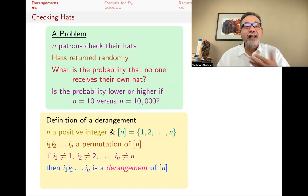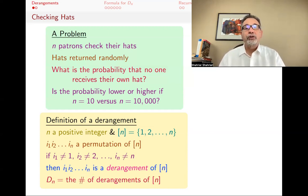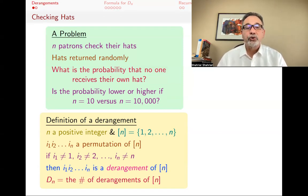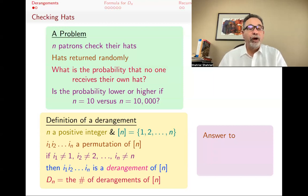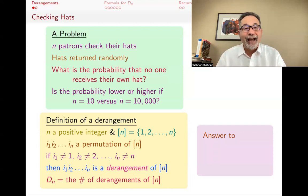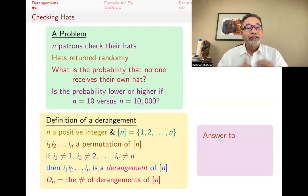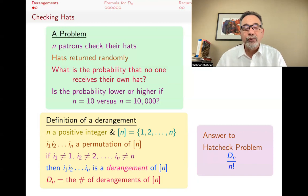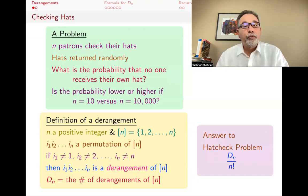We're interested in the number of those derangements, which I'll call capital D_N for derangements. The answer to our hat check problem is going to be: there are N! ways of permuting the hats, D_N of them are the derangements where no one gets their own hat back, and so the answer to the hat check problem is D_N over N!. If we can get a handle on D_N, we will be able to answer the hat check problem.